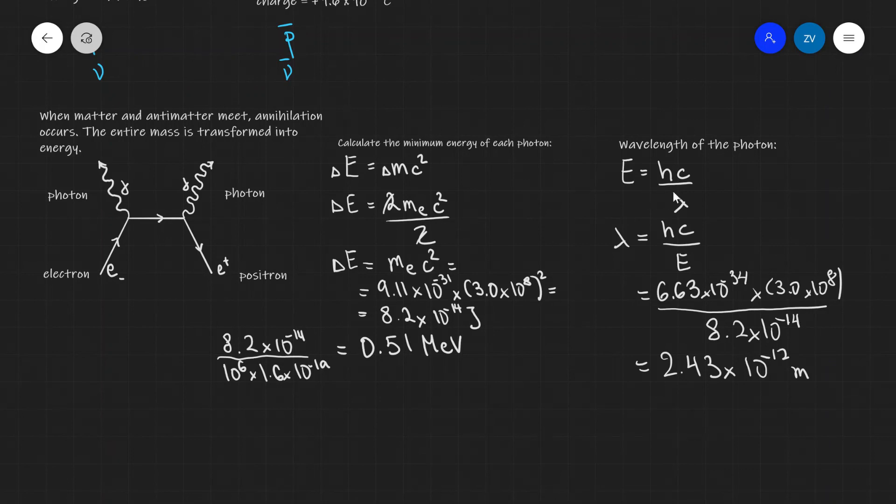If we wanted to, we could use E is equal to hc over lambda to calculate the maximum wavelength of these photons, which in this case for the electron-positron collision is about 2.43 times 10 to the power of minus 12. If we wanted to, we could also use E is equal to hf to calculate the minimum frequency as well. Hopefully this makes sense. Thank you very much for watching, and I'll see you in the next video.